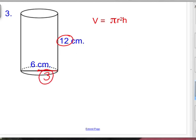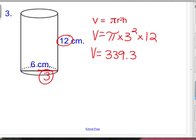Got to watch out for that. Pi button times 3 squared times 12. And hopefully yours matches mine, or one of us did something wrong, right? 339.3 cubic centimeters. That's the volume of that cylinder that is 12 centimeters tall.